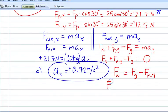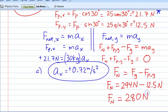So, that means that the normal force is equal to the force of gravity, which we said was 294, because that's 30 times 9.8, minus f pole in the y direction, which is 12.5. And that gives us a normal force of 281.5, but we're going to round that to two sig figs, so 280 newtons, and that's positive.